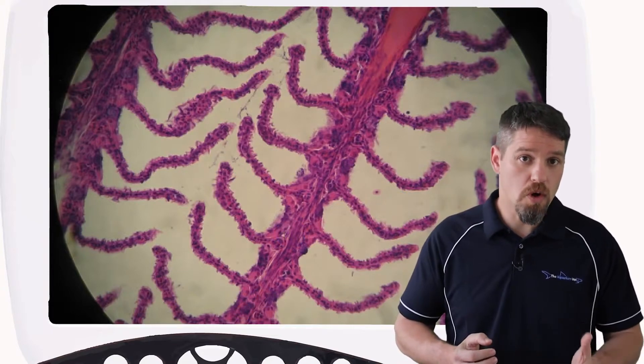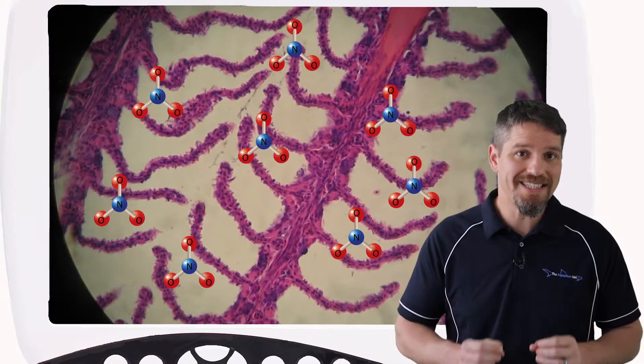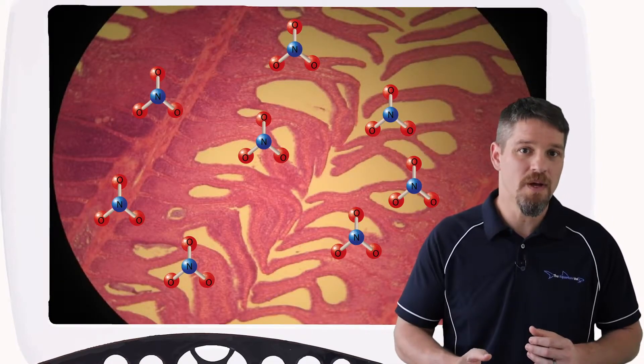Long term exposure to poor water quality such as high nitrates can result in this excessive growth of the gill epithelium. Ultimately, the fish's body is trying to protect the gills, but this unfortunately results in a reduced ability for gas exchange to occur and it also makes maintaining osmotic balance much more difficult for that fish.